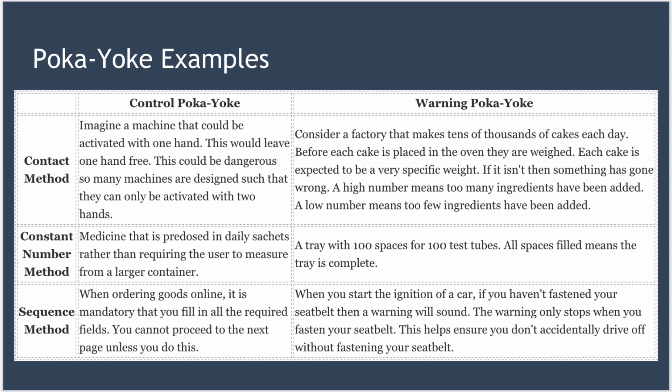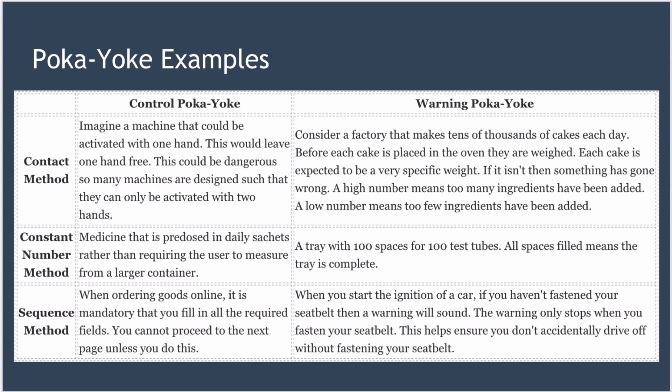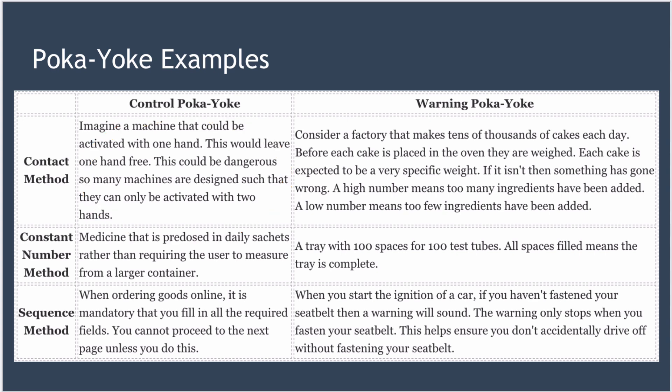So let's look at some examples of each of these. The first example is the contact method of implementing a control Poka-Yoke. Imagine a machine that could be activated with one hand, leaving one hand free. In certain circumstances this could be dangerous, so many machines are designed such that they can only be activated if you use both hands to start them.